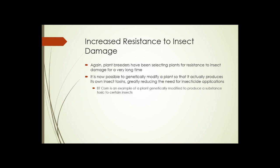Bt corn is an example of a plant genetically modified to produce a substance toxic to certain insects. The Bt in Bt corn stands for Bacillus thuringiensis, a bacteria that produces a toxin which is poisonous to insects that have a caterpillar stage in their life cycle.